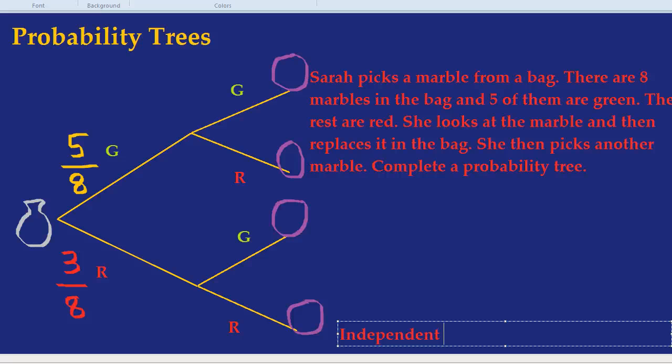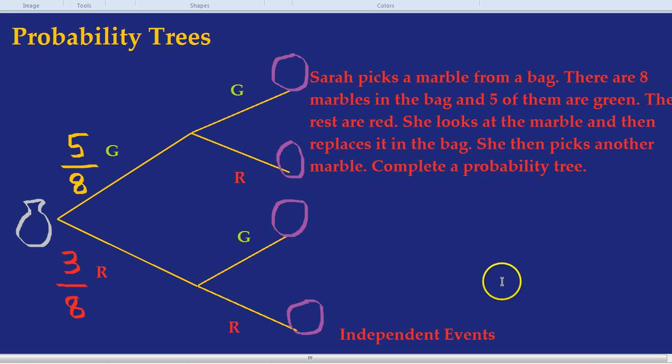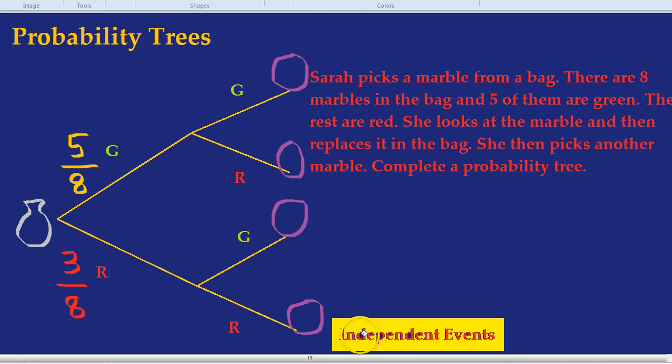What's the chances of someone in New Zealand called Emma tripping over and it raining in London? They're completely independent events. And here because Sarah replaced the marble, these are also independent events. It doesn't matter the second time whether she picked a green or a red the first time. The marbles don't care which one you picked first. They're just going to give you the same probability the second time as they gave you the first time.